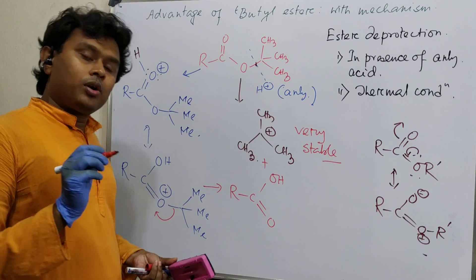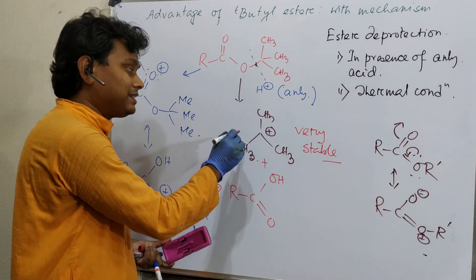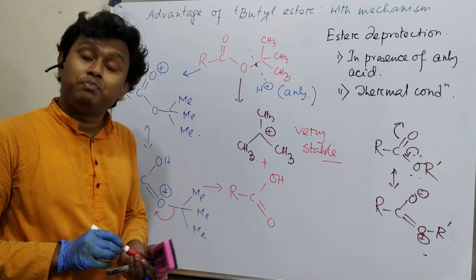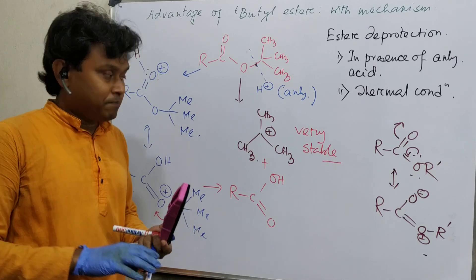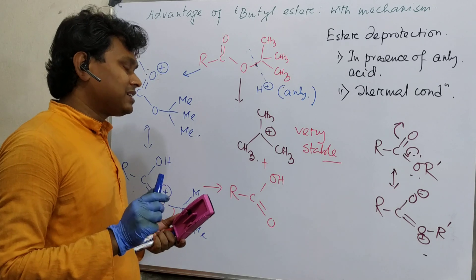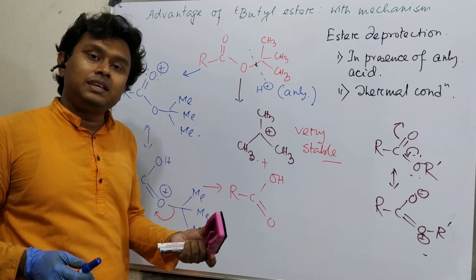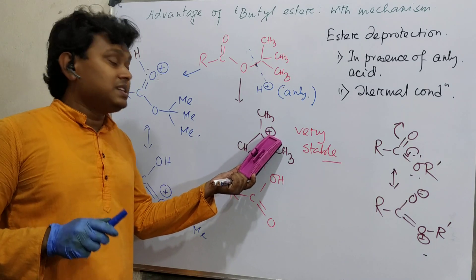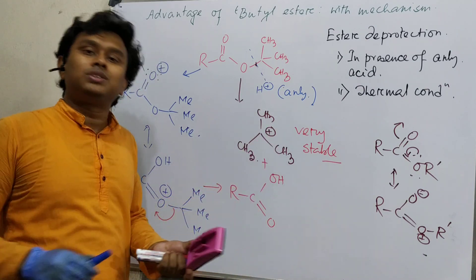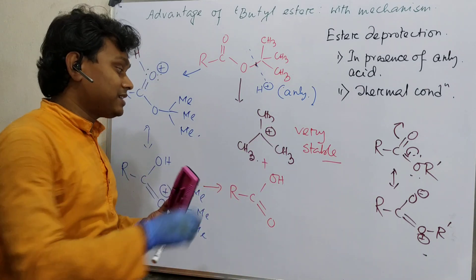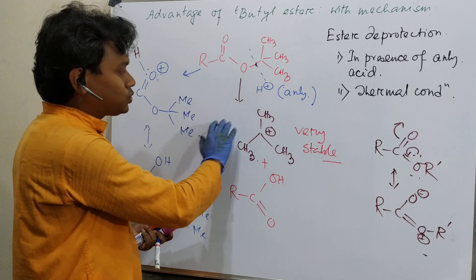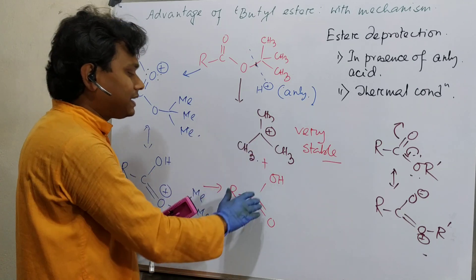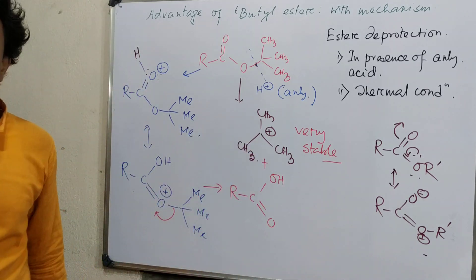I have already uploaded a lecture explaining that this tertiary carbocation is more stable than the benzyl cation. The benzyl cation is stabilized by the +R effect, but the stabilization of the tertiary butyl carbocation exceeds that — that is what makes it unique. In this way, anhydrous acid hydrolyzes the tertiary butyl ester and we can get back the corresponding carboxylic acid.